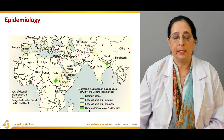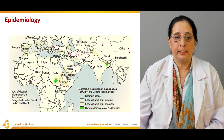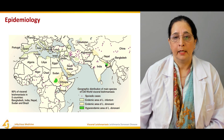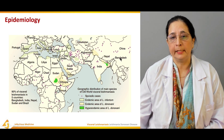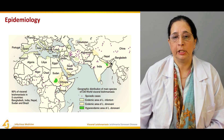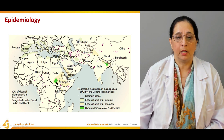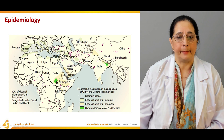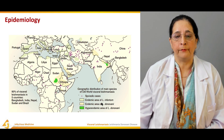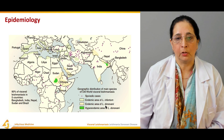These are hyper-endemic areas. Most cases occur in Sudan, followed by India, Nepal, and Bangladesh. This entire region surrounding India, Nepal, and Bangladesh is considered a hyper-endemic region. Sudan is also a very hyper-endemic area. There are also distinct endemic areas for Leishmania infantum and Leishmania donovani.